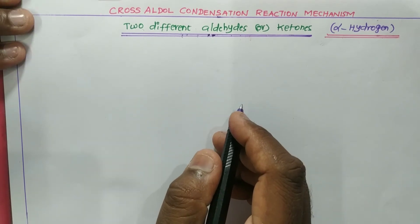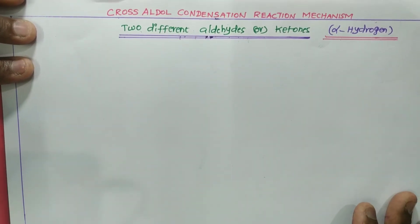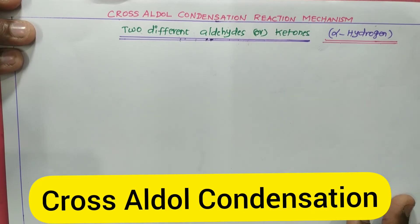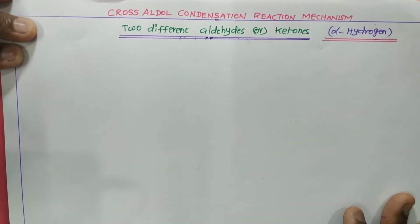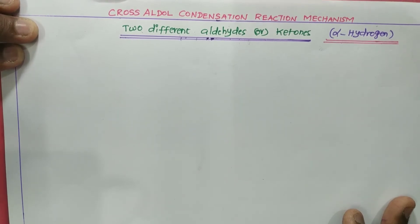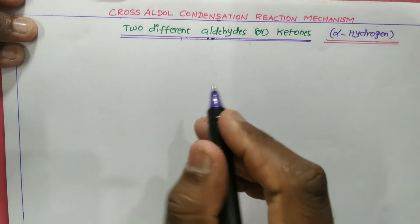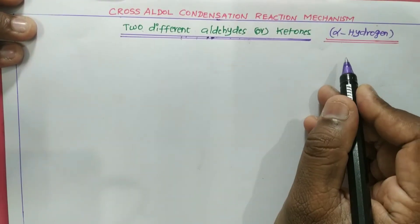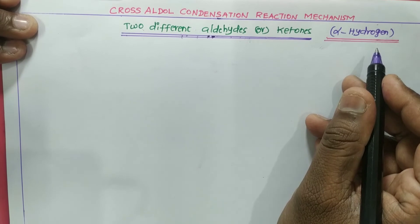Welcome to our channel. Today we are going to talk about the cross aldol condensation reaction mechanism. In aldol condensation involving a dilute sodium ethoxide, two same aldehydes or ketones react to condense and form an aldol product.